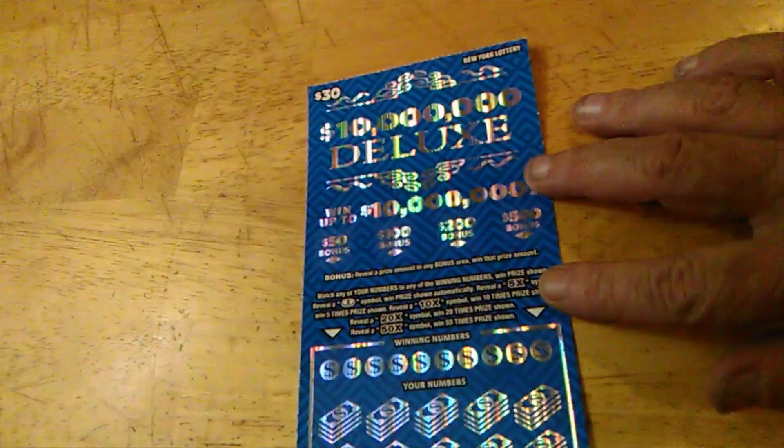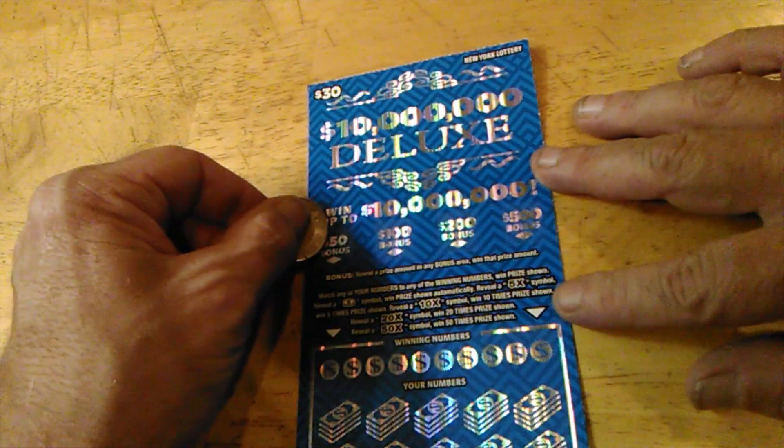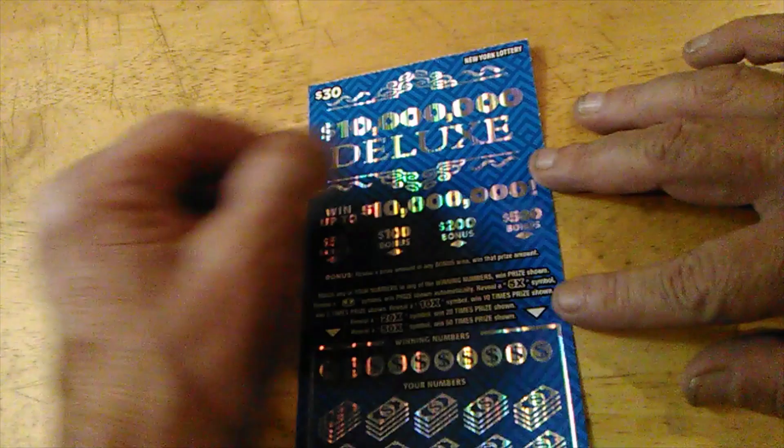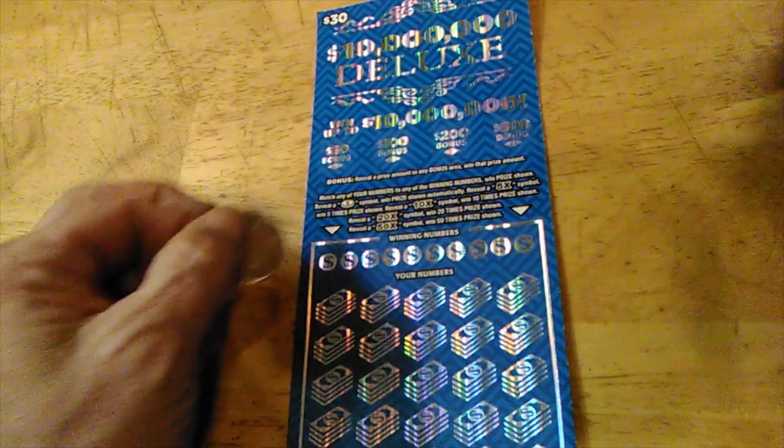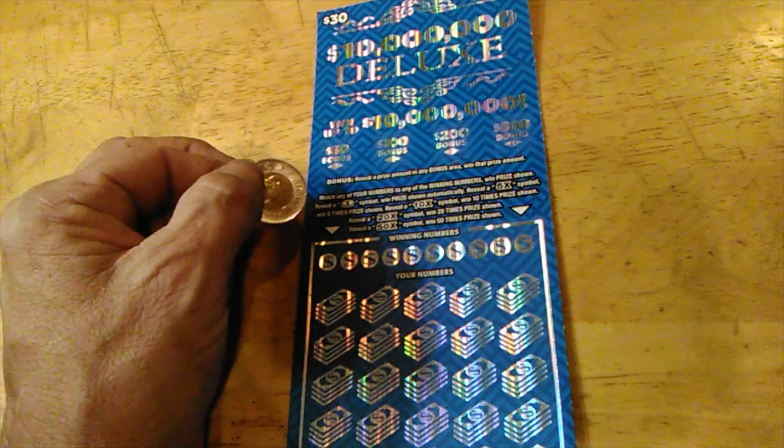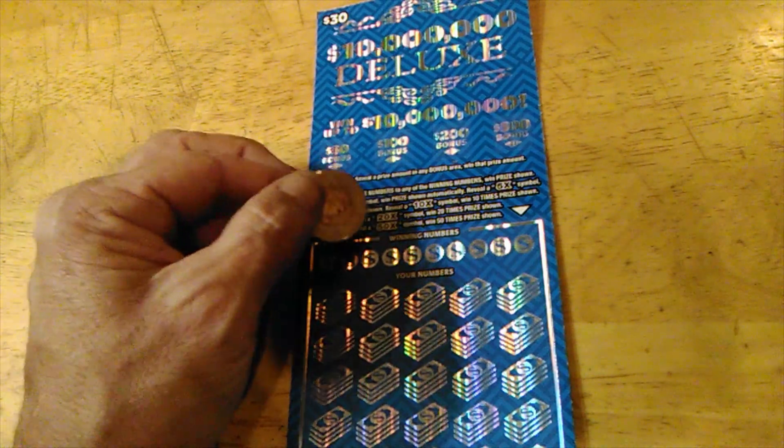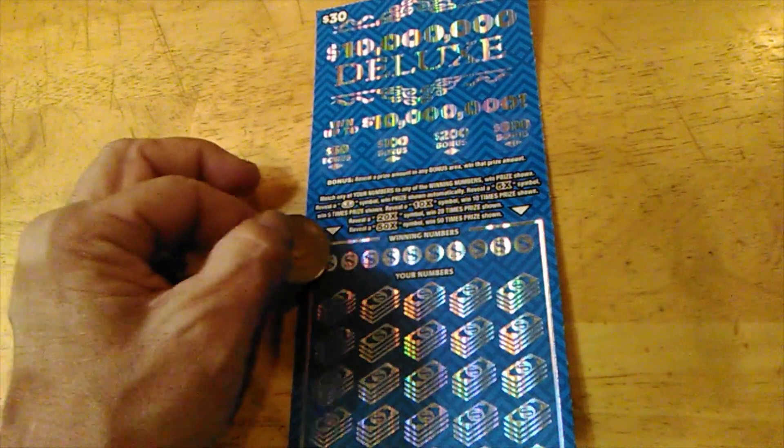Okay, pretty simple. Scratch an amount, get a prize amount, win the amount. But it's 50, 100, 200, 500. Down on the bottom, get a coin, win it automatically. You can get 5x, 10x, 20x, or 50x. Winning numbers, your numbers.